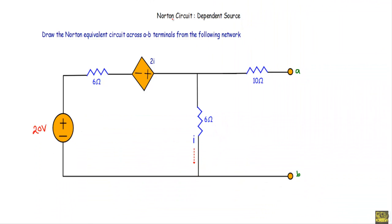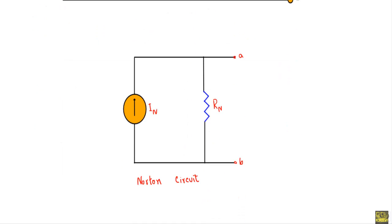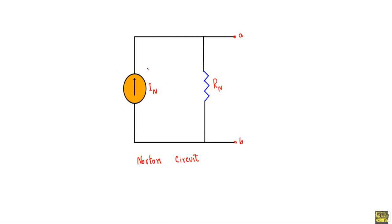In this video I will show you how to reduce a circuit to a Norton equivalent circuit where the circuit contains a dependent source. We have to draw the Norton equivalent circuit across A-B terminals from the given network. When we reduce the network to a Norton equivalent circuit, we get the Norton current source In in parallel with the Norton resistance Rn.